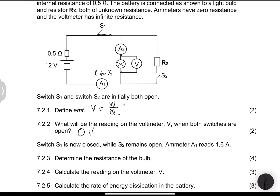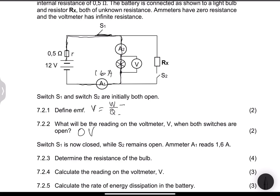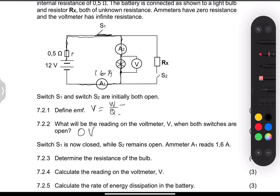If you think about it, current will flow through the internal resistor. And because there's no current flowing through resistor RX, we don't have a parallel combination in this case. So the total current will pass through A2, through the bulb, and also through A1. It means that both A1 and A2 will actually read the same value of 1.6 amps.